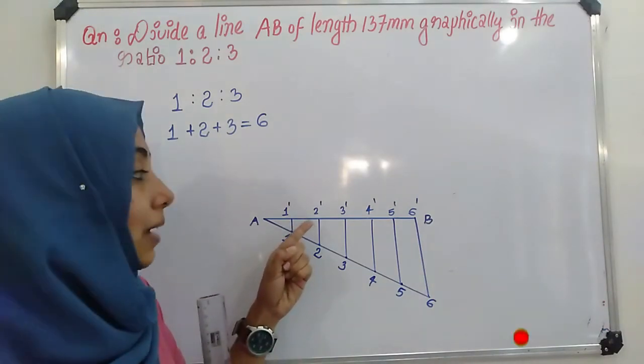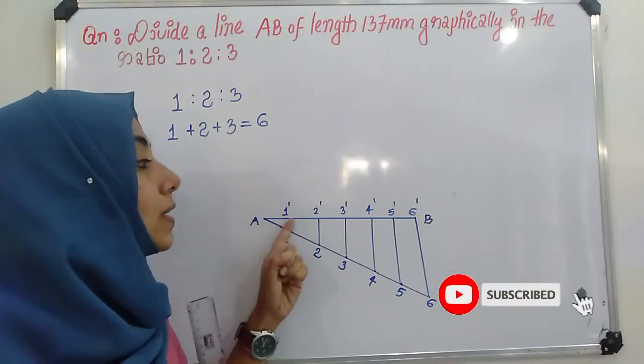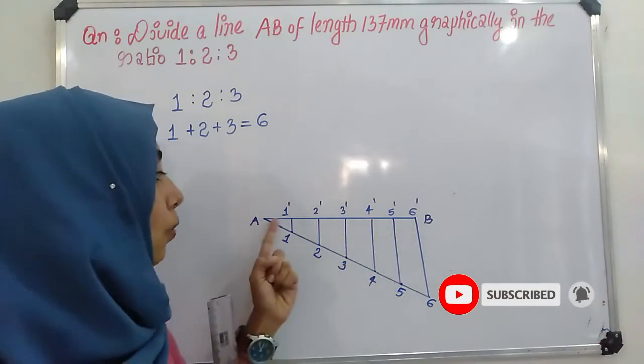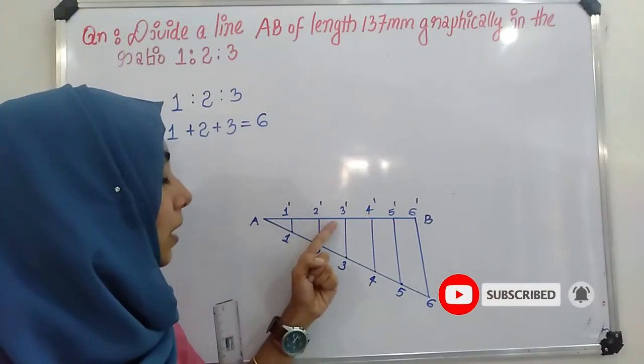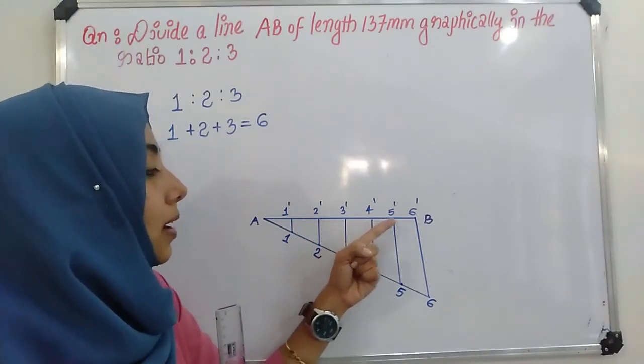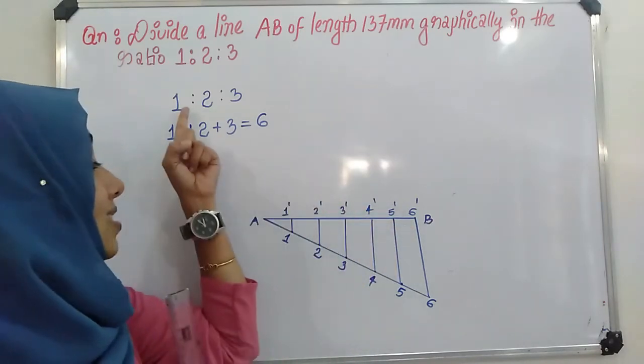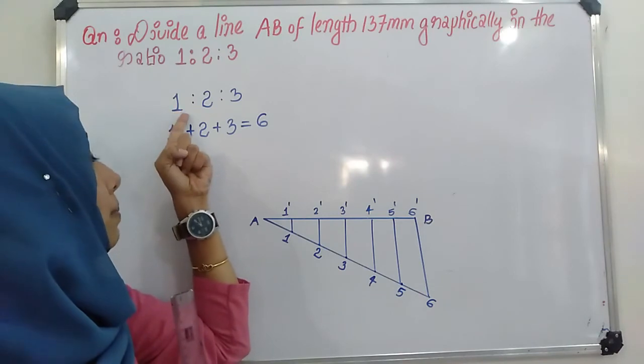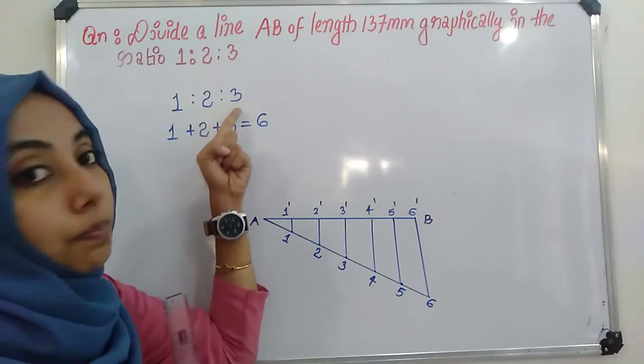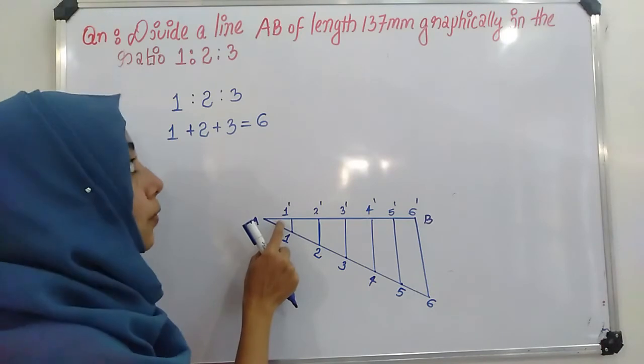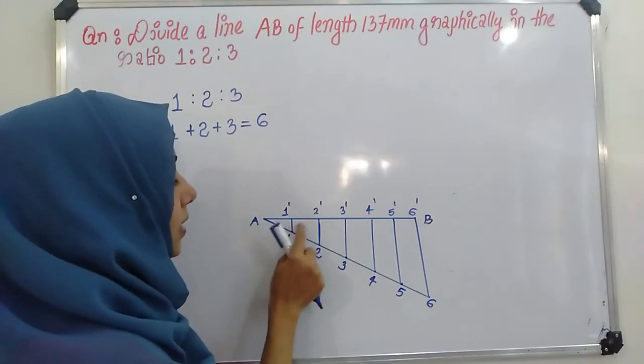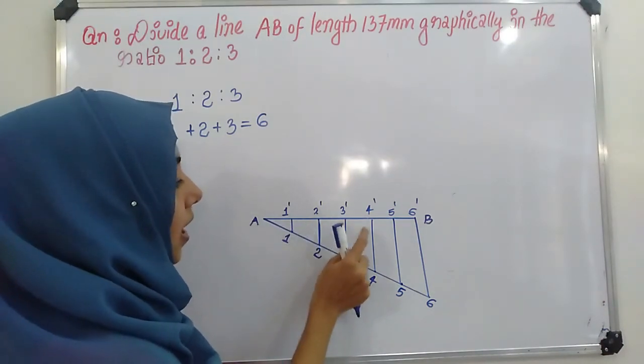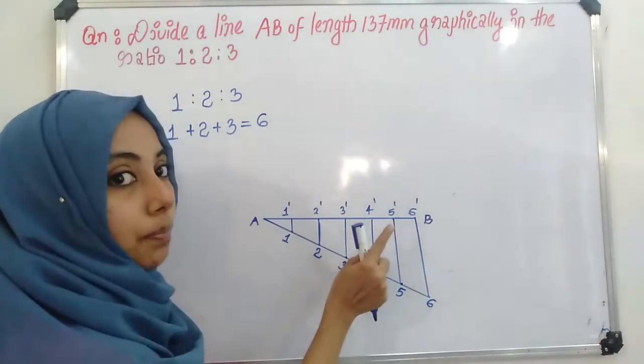Okay, now the given length AB is divided into 6 equal parts: 1 part, 2 part, 3 part, 4 part, 5 part, 6 part. But we have to divide the given length of line into 1 part, 2 parts, 3 parts. So this is 1 part and these 2 are 2 parts and these 3 are 3 parts.